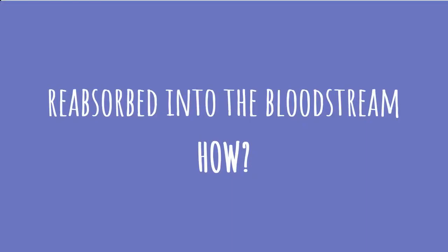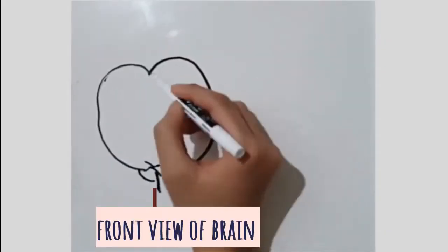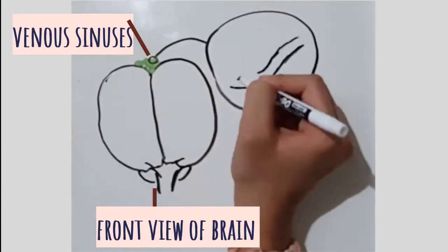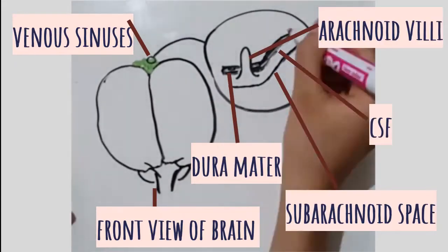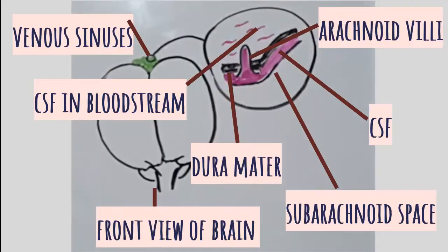This happens at the top of the brain, where CSF is pulled through these tunnels called arachnoid villi, out of the subarachnoid space and into the venous sinus. This system is known as the ventricular system.